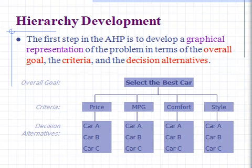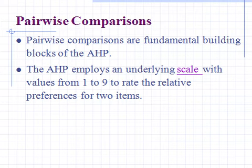It should be noted that level one is the goal, level two is the criteria, and level three is the alternatives. Pairwise comparisons are fundamental building blocks of AHP. The AHP employs an underlying scale ranging from one to nine to rate the relative preferences for two items.